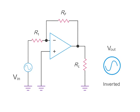The equation for calculating this process is negative RF divided by R1.